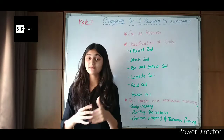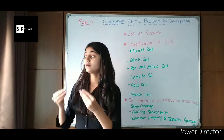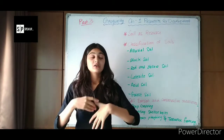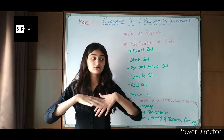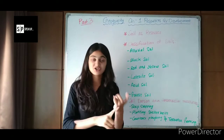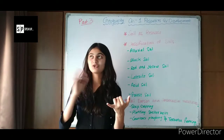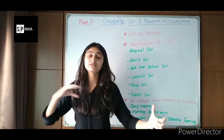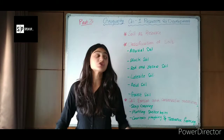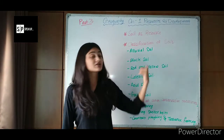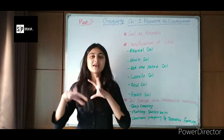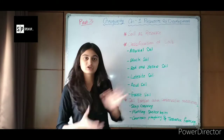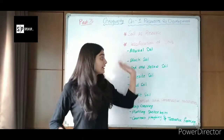Black soil is present in areas such as Gujarat and Maharashtra, and can also be seen in some parts of Madhya Pradesh. Black soil is also known as Regur soil. These are the main characteristics of black soil.